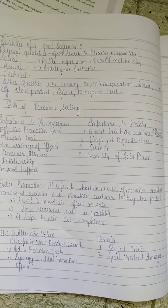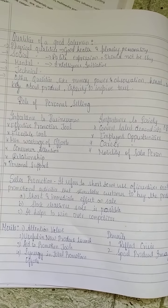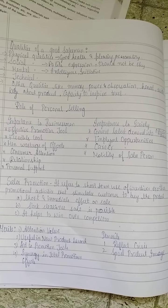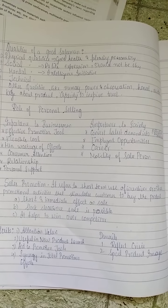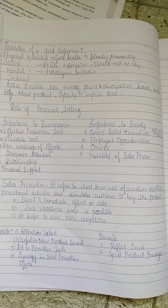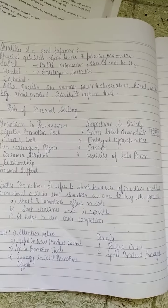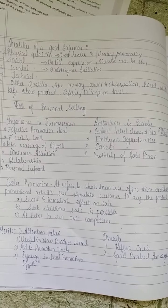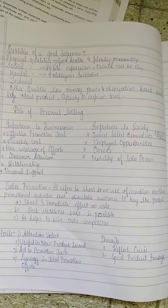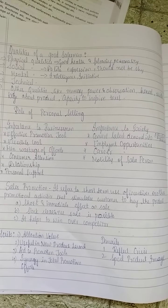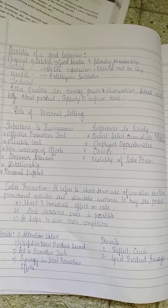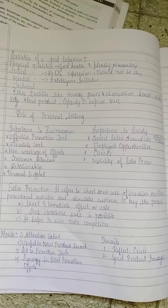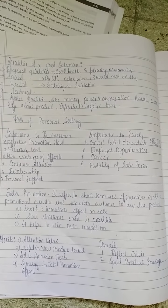Sales promotion is a short-term use of incentives. For example, when you go to a mall you see three-day sales, Republic Day sales, end-of-season sales. These are given to clear stock or provide various kinds of incentives to stimulate customers to buy products. It has a short and immediate effect on sales, helps to clear stock, and helps win over competition.